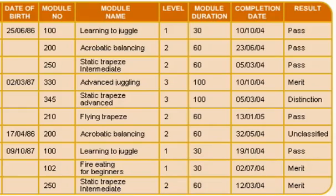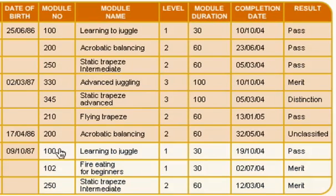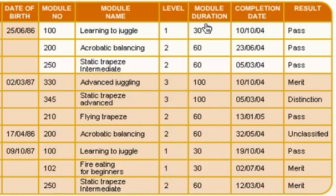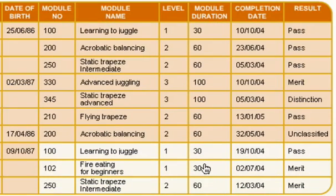Let's take a look and start this exercise. Here's my set of unnormalized data. You can see straight away there's lots of duplication. The module number, looking down, there's 100 twice. Level has repeated values of two, three, two, two, ones, and two. Duration, again a similar story. So there's lots of duplication of data there, and we want to avoid that.